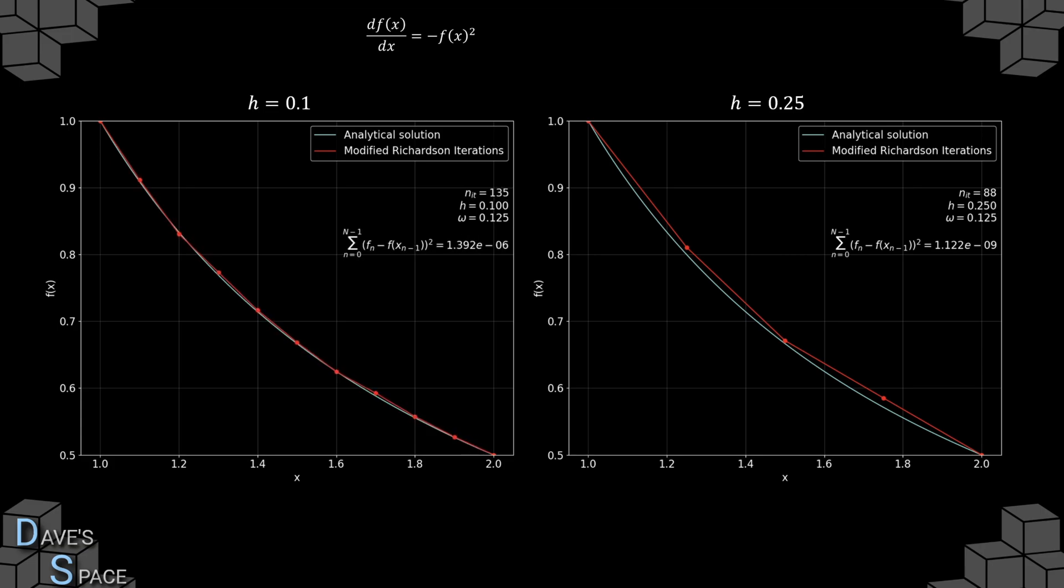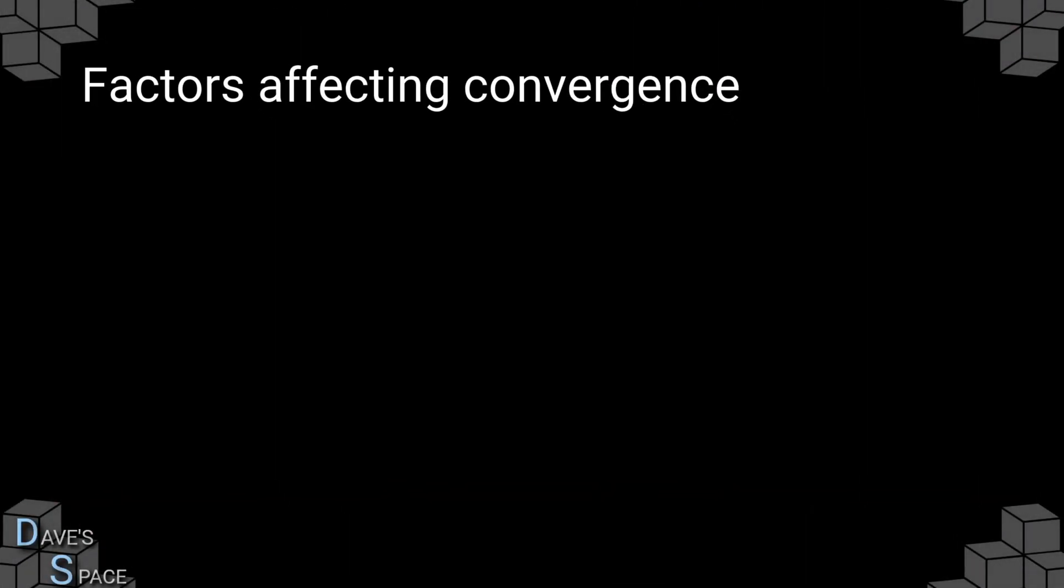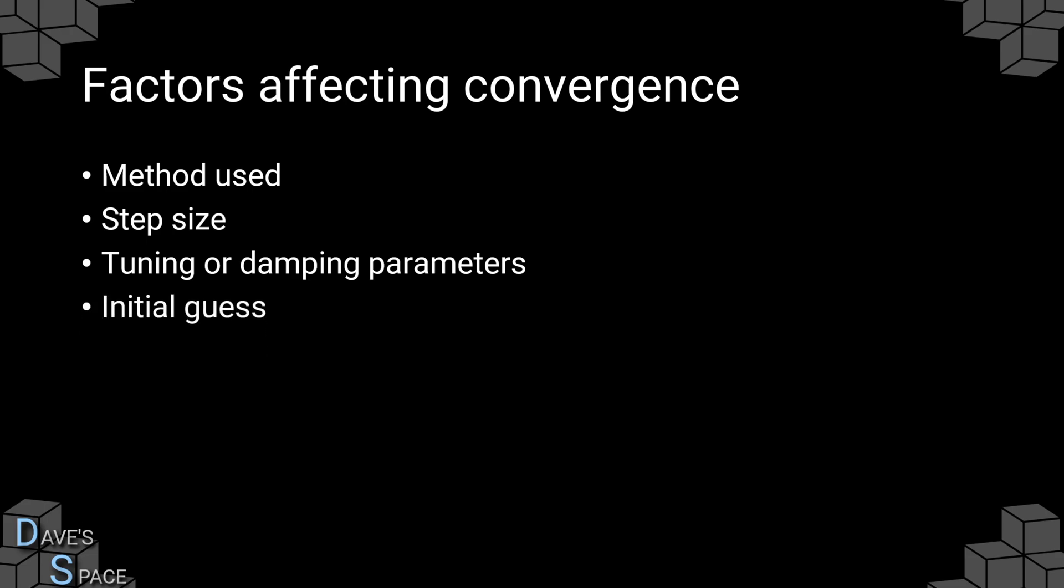In fact, at this point, it is probably worth mentioning that whether the solution converges or not depends on a number of factors. The convergence of an iterative method depends on the method used, the step size, and any tuning or damping parameters. So for example, in our modified Richardson iteration method, the omega can be thought of as a damping factor and of course the initial guess. And quite importantly, a bad initial guess can lead to rapid divergence and a good initial guess can lead to rapid convergence. Luckily, the main application of the finite difference method is in physical problems. And so the class of solution is often known, so good initial guesses can be made.